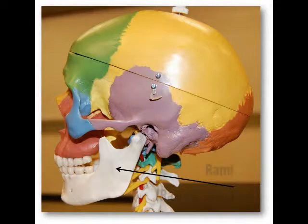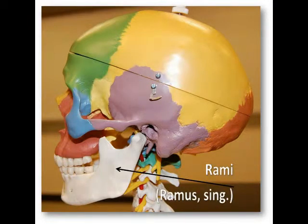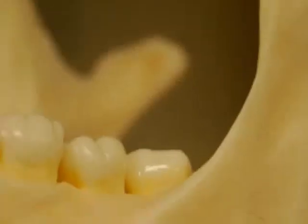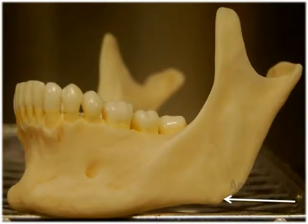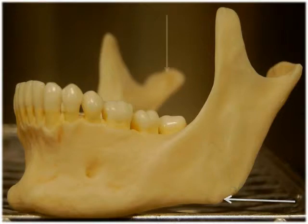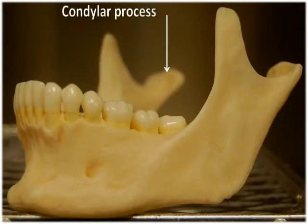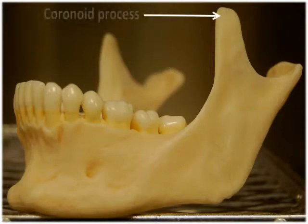The parts of the mandible extending superiorly from the body are the rami. The angles are the areas of the mandible where each ramus extends away from the body. There are two processes on each ramus: the posterior condylar process and the anterior coronoid process.